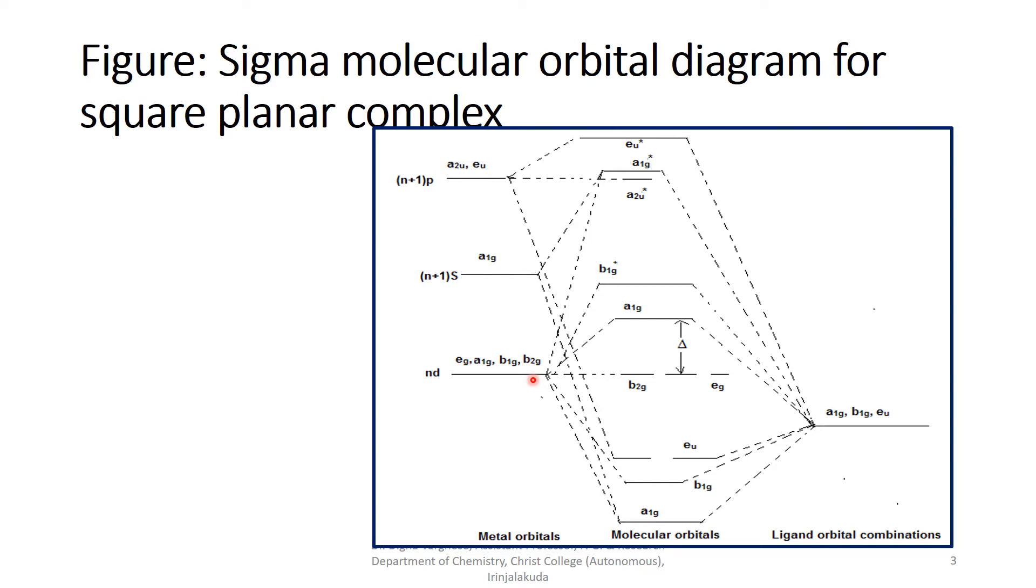The d-orbitals split in square planar complexes like this, and A1g for s-orbitals, and A2u for p-orbitals. And here, the metal orbitals and the ligand-orbital combination is A1g, B1g and Eu that will be matched with the symmetry of the metal orbitals.